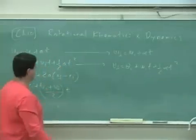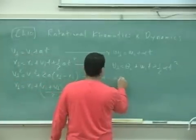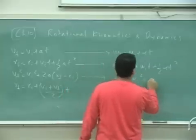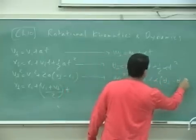So you have here theta final is theta initial plus omega initial t plus half alpha t squared. And then over here,